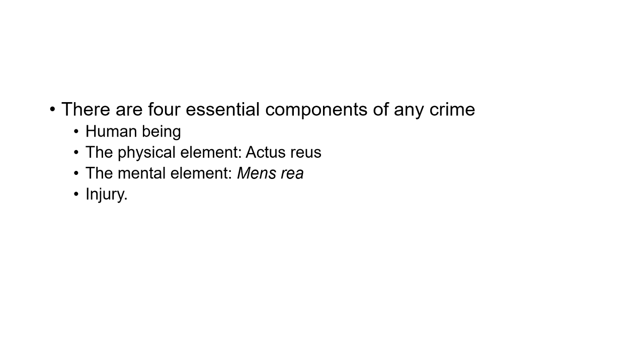Now we will move to the next part of our chapter: what are the essential ingredients of a crime. There are four essential components of any crime. They are: human being, actus reus (the physical component of the crime), mens rea (the mental element of the crime), and injury. Let us discuss these essential ingredients in detail.